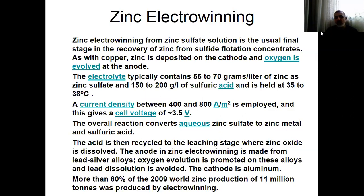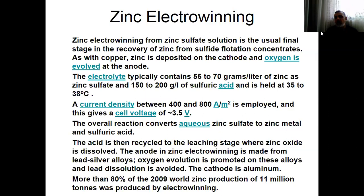The acid is then recycled to the leaching stage where zinc oxide is dissolved. The anode in zinc electrowinning is made from lead-silver alloys — oxygen evolution is promoted on these alloys and lead dissolution is avoided. Remember, lead cannot be dissolved in sulfuric acid — sulfuric acid has no action on lead. This is the reason we tend to use lead. Lead is an inexpensive metal and the corrosion resistance is considerably high. The cathode is aluminum. More than 80% of the 2009 world's production of 11 million tons of zinc was produced by electrowinning processes — so electrowinning is everywhere, electrochemistry is everywhere.